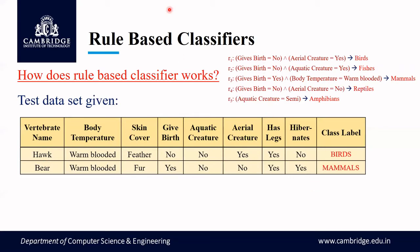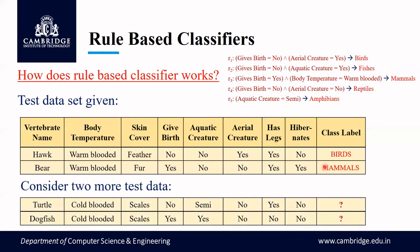This is how we use the derived rule set to find the class label for test data. Now, to understand properties of a rule set, consider two more test records. We want to classify Turtle — is it a bird, fish, mammal, reptile, or amphibian?